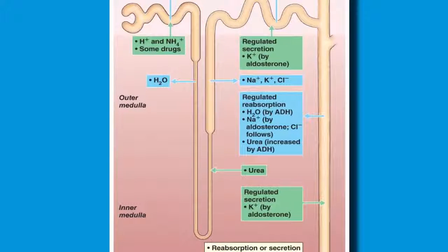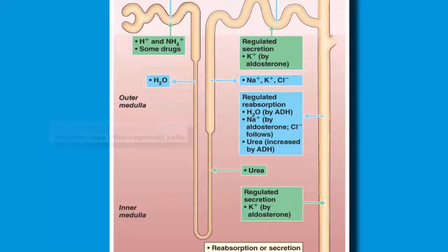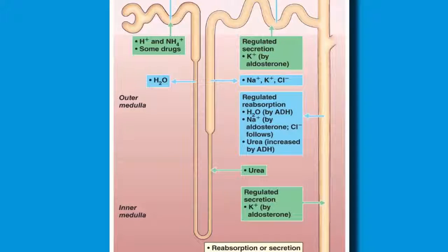At the nephron loop, water and solutes will move independently of one another. This is different than in the proximal convoluted tubule. Here water leaves the descending limb of the loop, but not the ascending limb. This is due to a lack of aquaporins in the ascending limb. Solutes, on the other hand, readily leave the ascending limb, but not the descending limb. We will look further at this phenomenon when we look at the mechanisms behind the kidney's ability to form concentrated urine for the conservation of water.